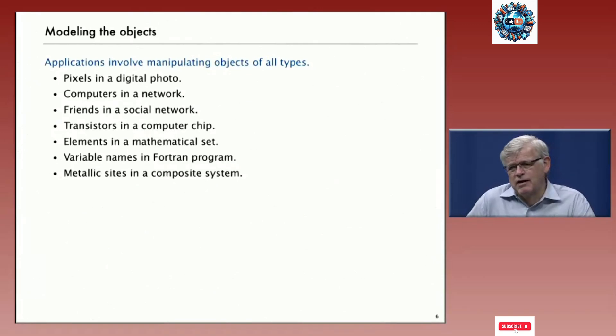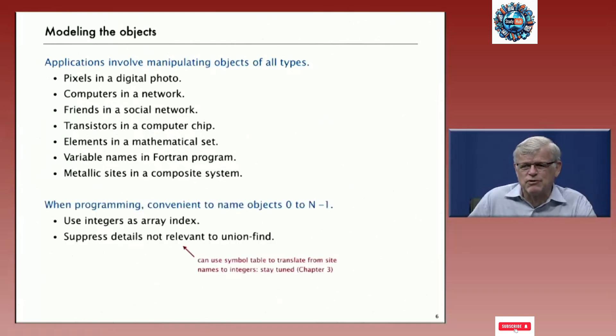Now, applications of this, these algorithms involve objects of all types. These are used for digital photos where the objects are pixels. They're used for networks where the objects are computers. Social networks where it's people or computer chips where it's circuit elements or abstract things like variable names in a program or elements in a mathematical set or physical things like metallic sites in a composite system. So all different types of objects, but for programming we're going to associate each object with a name and we'll just name the objects with the number, the integers from zero to n minus one.